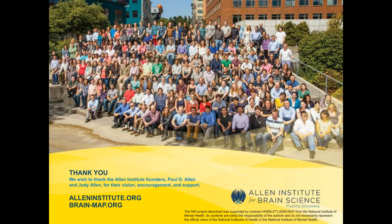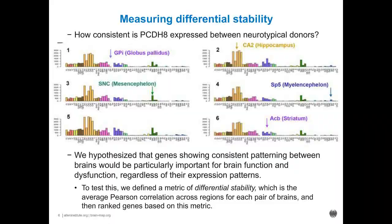Next question: could you please define differential stability? Differential stability is defined as the average Pearson correlation across brain regions, pairwise across brain regions for the six brains in this study. Between brains one and two, we take the height of each bar in brain one, compare it to the height of each bar in brain two, and get a Pearson correlation — a value between negative one and one. We do that for one versus three, one versus four, one versus five, and so on, then take the average value across the six brains. The highest values were pretty close to one; the lowest were around 0.2 or 0.3.